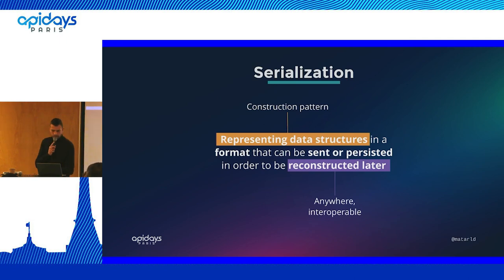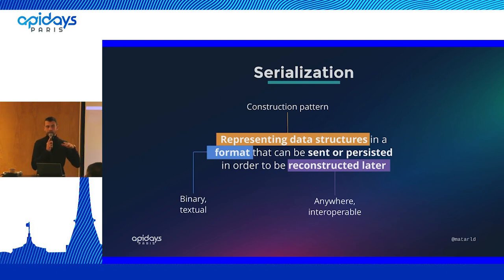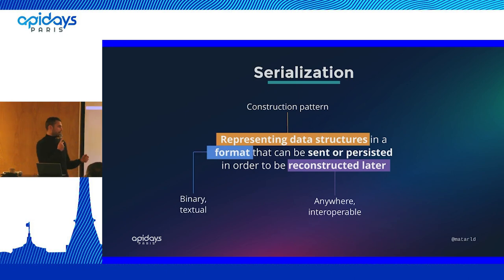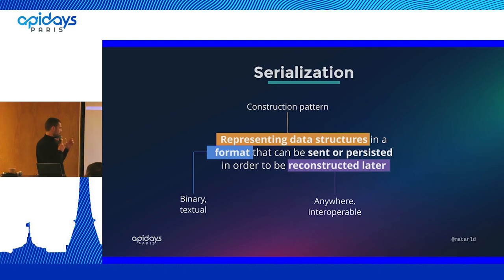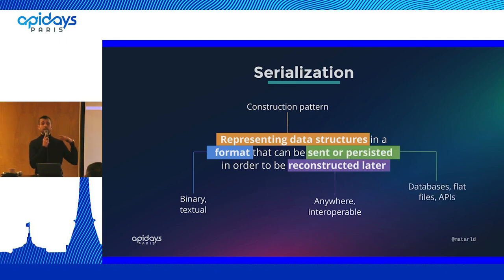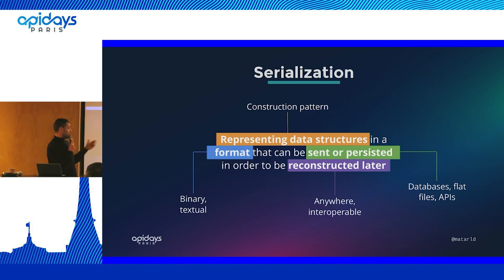You have to serialize them in a format - putting complex structure into a data stream. That data stream can be binary, which implies speed and lightness, or it can be textual as Symfony does, so that it can be readable and editable. With that inline data you can put it in a database or even send it through an API, and this is what API platform is doing.